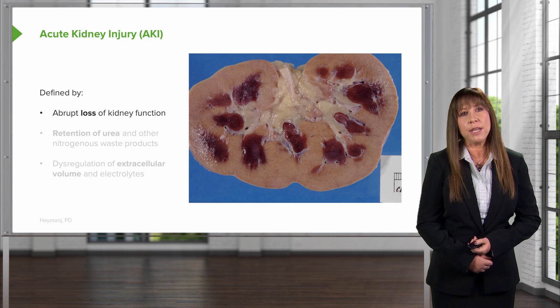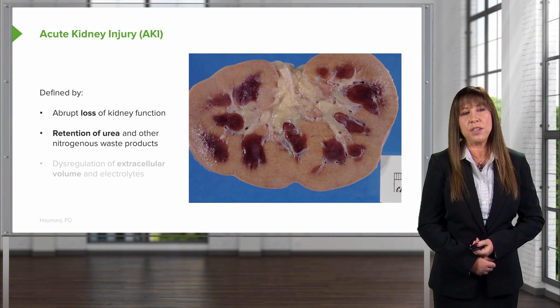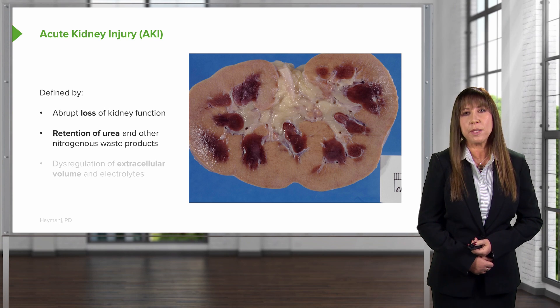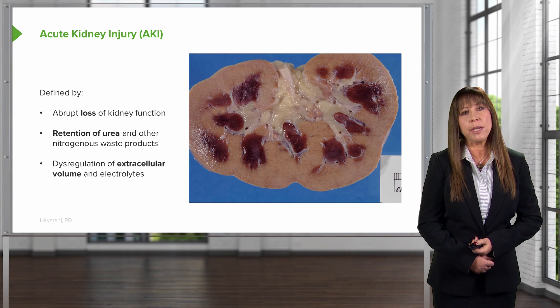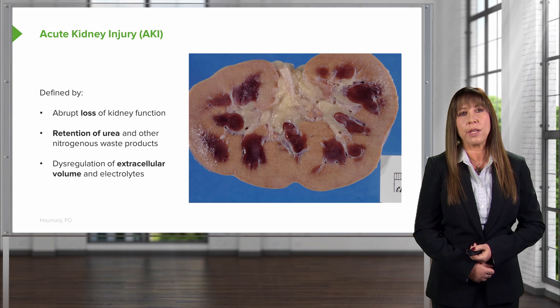Acute kidney injury is defined by the abrupt loss of kidney function, retention of urea and other nitrogenous waste products, as well as the dysregulation of extracellular volume and electrolytes.